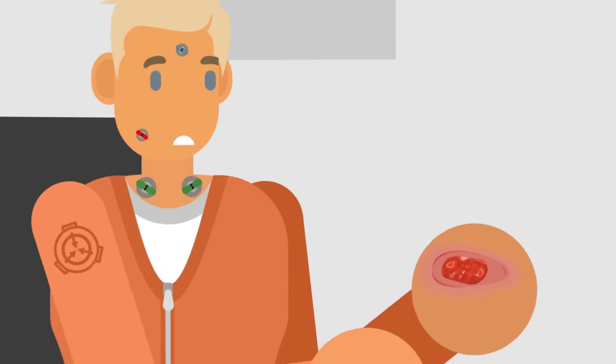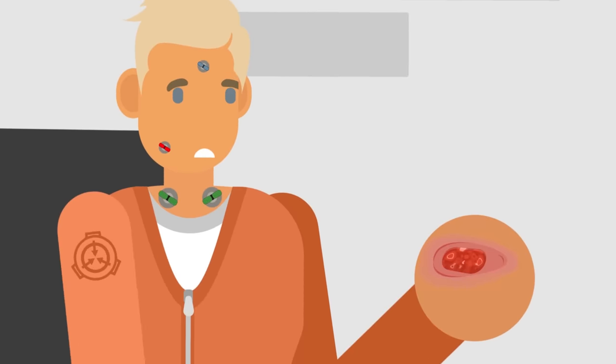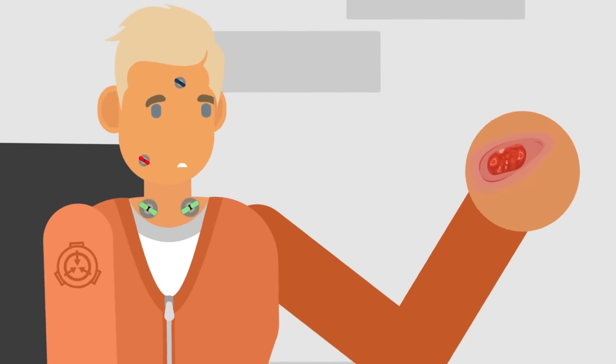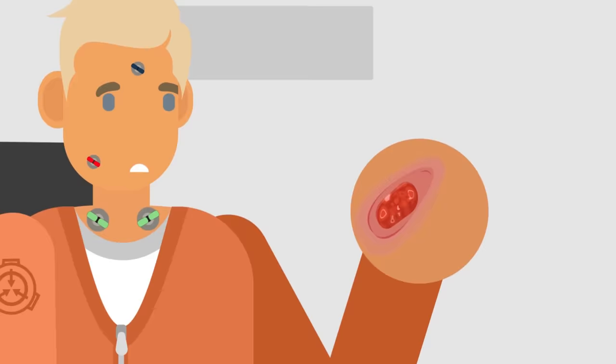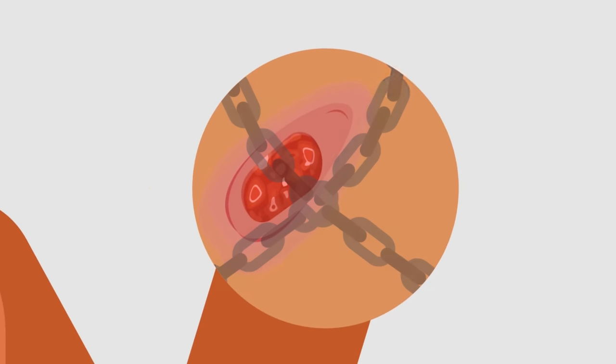As soon as this process began, the D-Class could not remove the stone from their hand. Unsettled, they attempted to shake the stone loose from their skin, but to no avail. It was firmly attached to the skin and would not be removed until the process was complete.